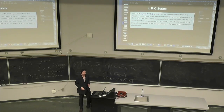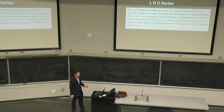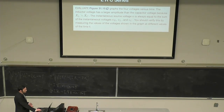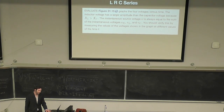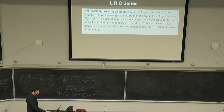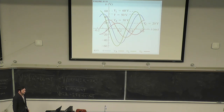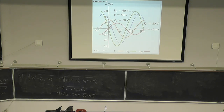Let's jump back into it. We have a figure that graphs the four voltages — V_R, V_L, V_C, and total voltage — versus time. The inductor voltage has a larger amplitude than the capacitor voltage because X_L > X_C. The instantaneous source voltage v is always equal to the sum of the instantaneous voltages V_R, V_L, and V_C — you could verify this by measuring values on the graph at different times. They're all oscillating at the same ω but not lining up because of the phase shifts among V_R, V_L, and V_C.